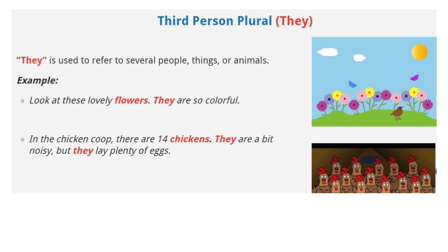Third person plural: they. 'They' is used to refer to several people, things, or animals. Example: 'Look at these lovely flowers. They are so colorful. In the chicken coop, there are 14 chickens. They are a bit noisy, but they lay plenty of eggs.'